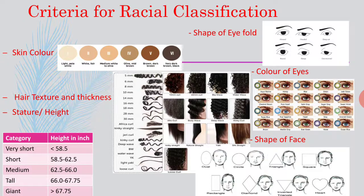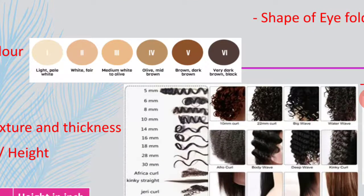There are different criteria for racial classification. In this slide I am giving some of those criteria which are easily observable from the first sight of a person. In the first sight itself you can see the skin color of a person. So the first criteria is skin color. Here I am giving 6 shades of human skin, starting from pale white to dark brown or black.